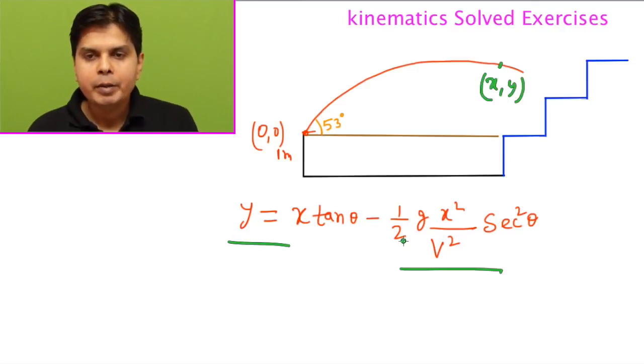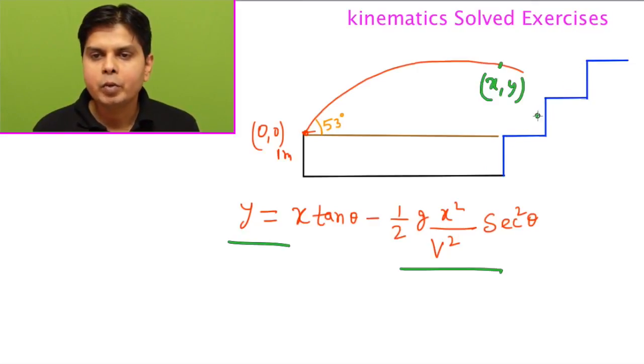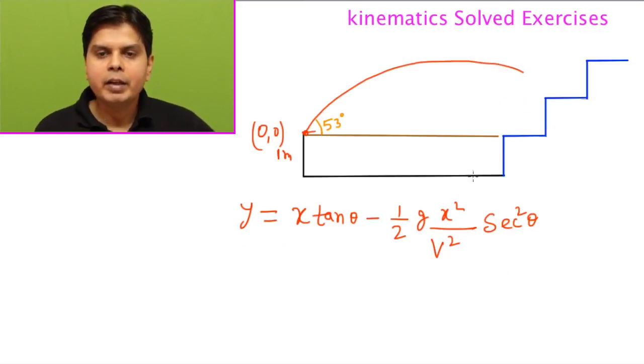Now we have to find out in this question where it will hit this staircase of benches. For that, what is given is that the first bench is at a distance of 110 meters, meaning this entire distance is 110 meters. After this, every bench has width 1 meter and height 1 meter - this is 1, this is 1, this is 1. So the width is 1, height is also 1.